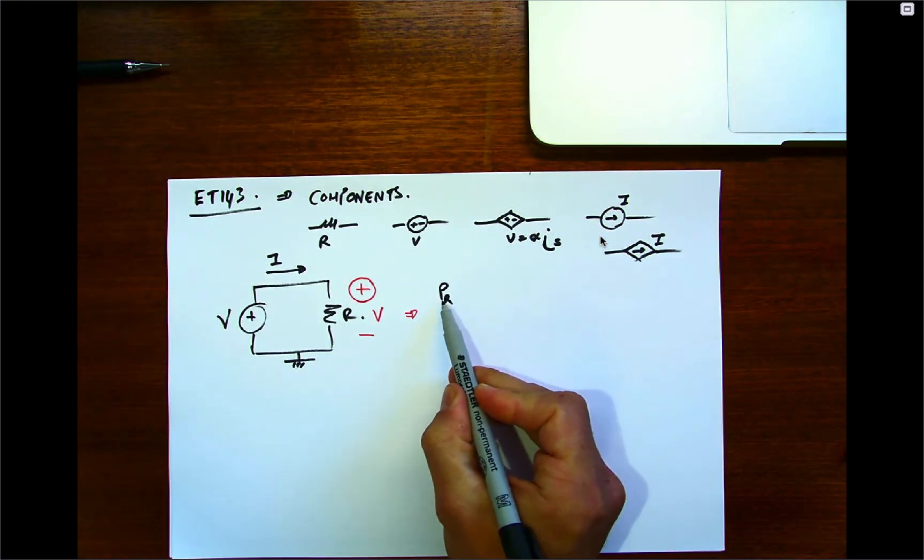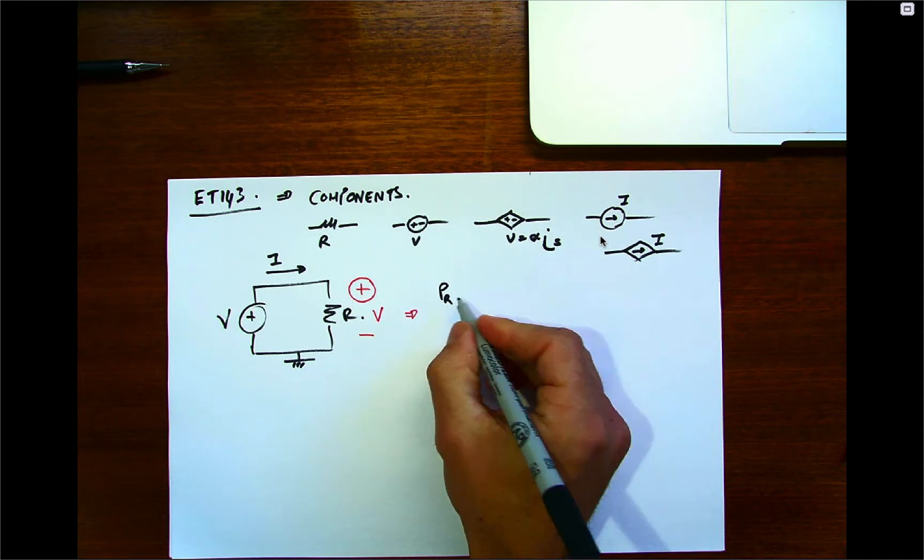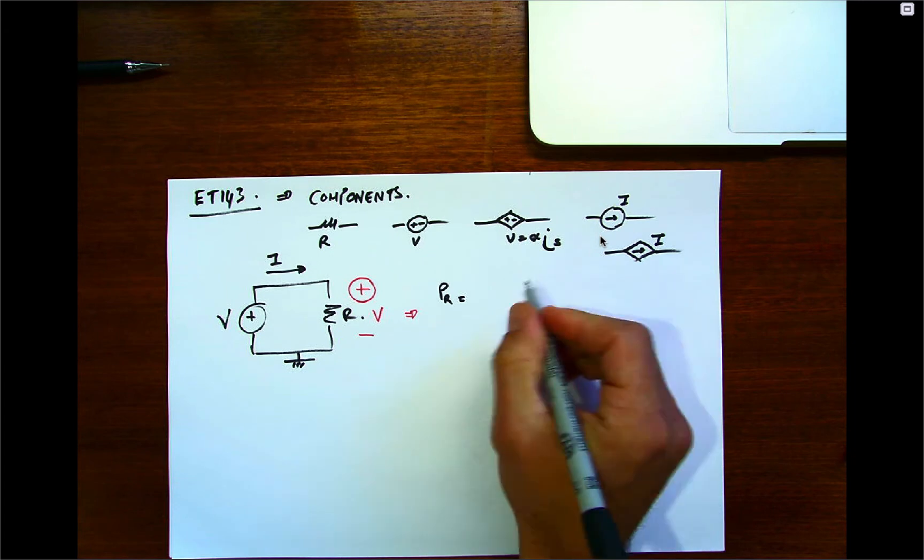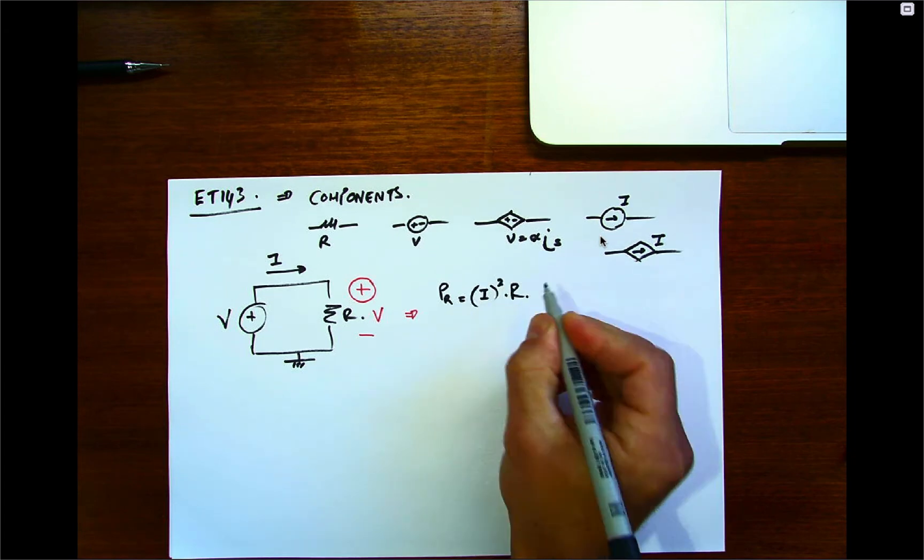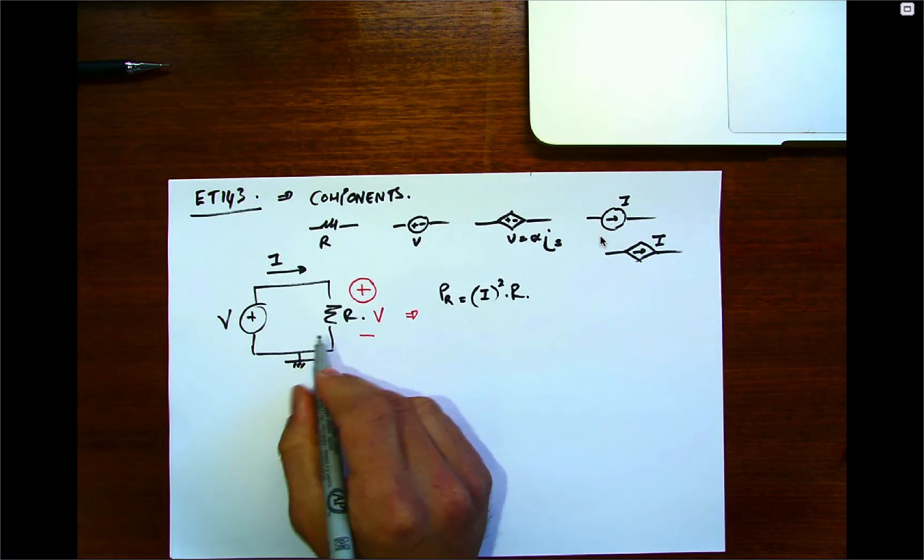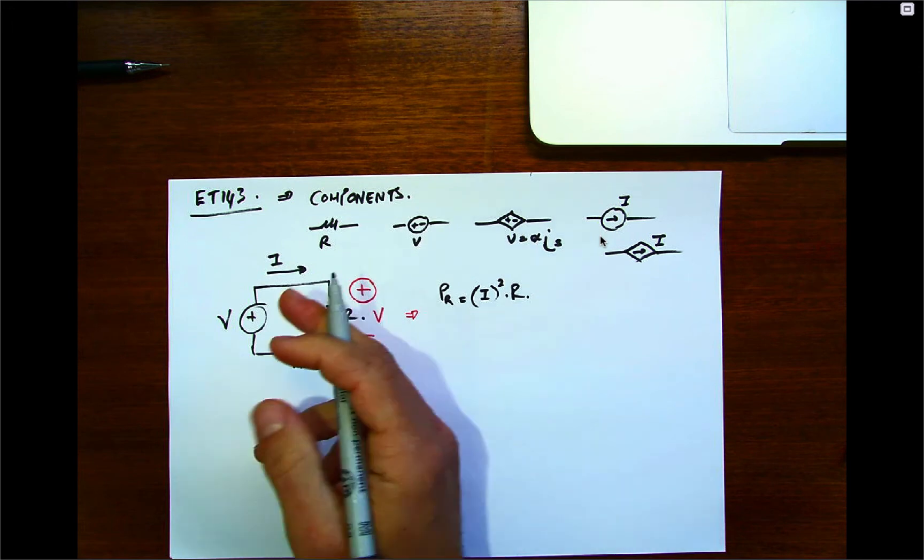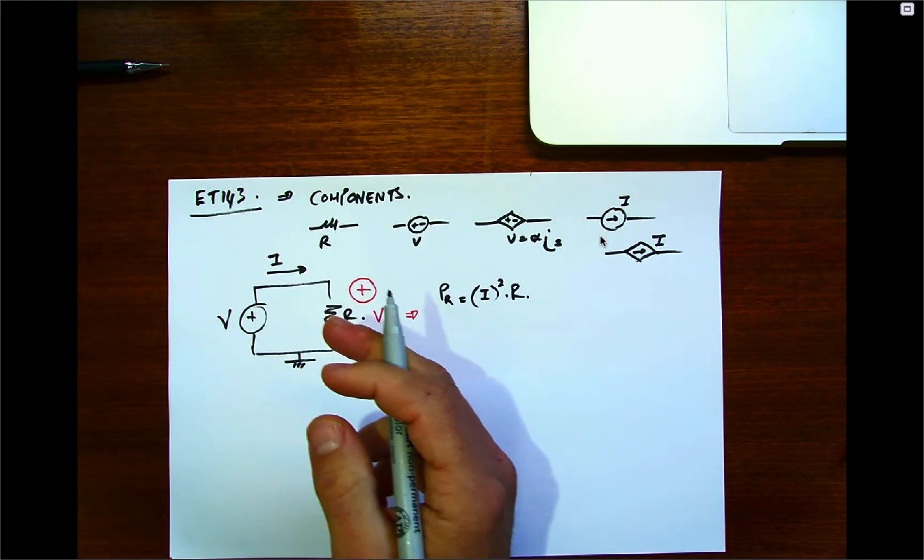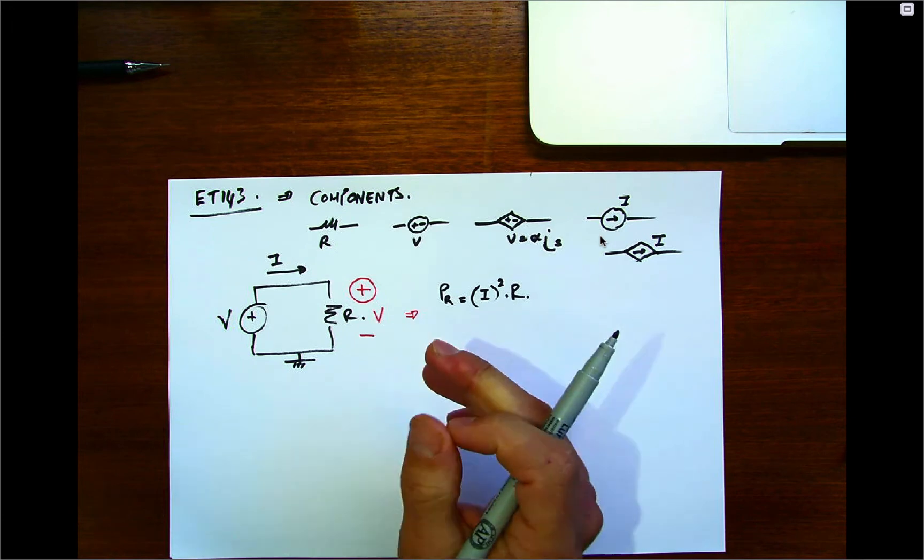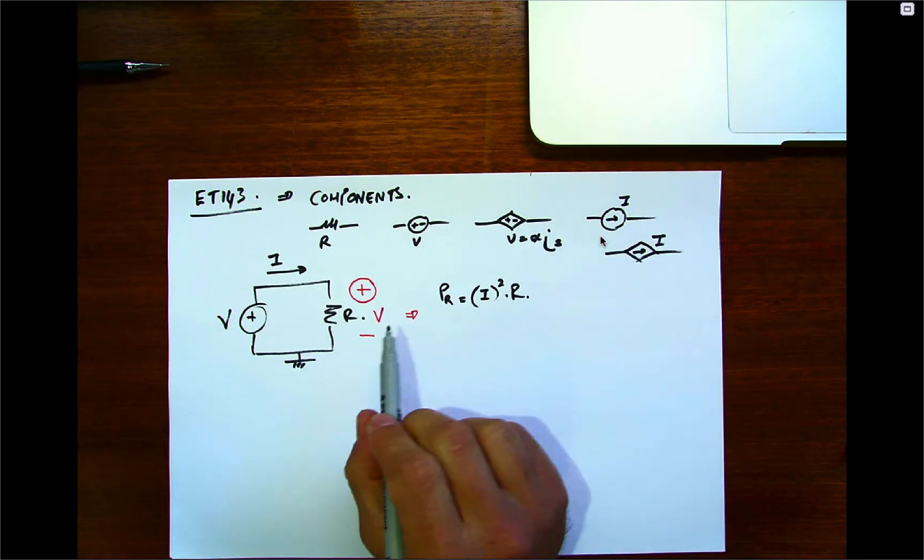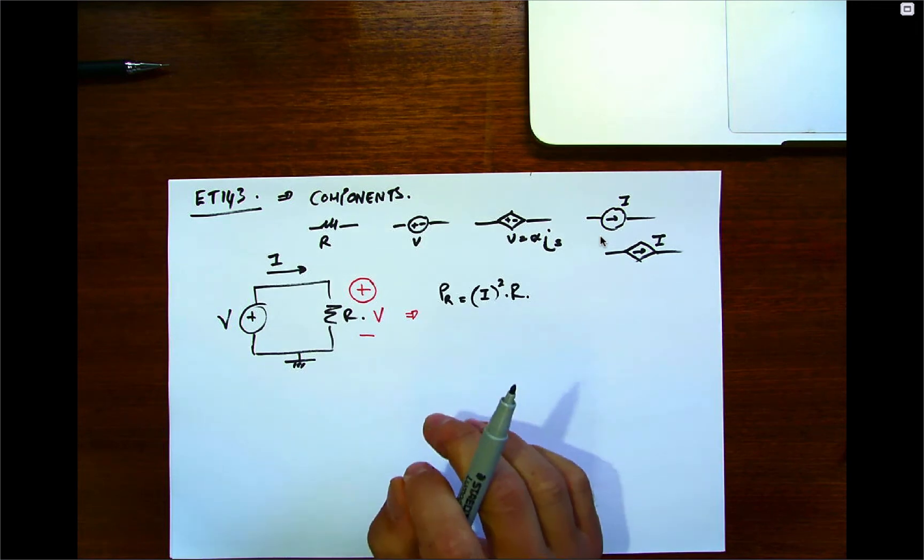So we want to figure out what is the value of the power either delivered or absorbed by this resistor. We can calculate it as we've derived in class, like I squared R. The power in this resistor—it's logical the power is always going to be dissipated. As electrons move through this resistor, this resistor creates resistance to that and it heats up. So the power, it's always going to absorb power. So we have a reference for a component.